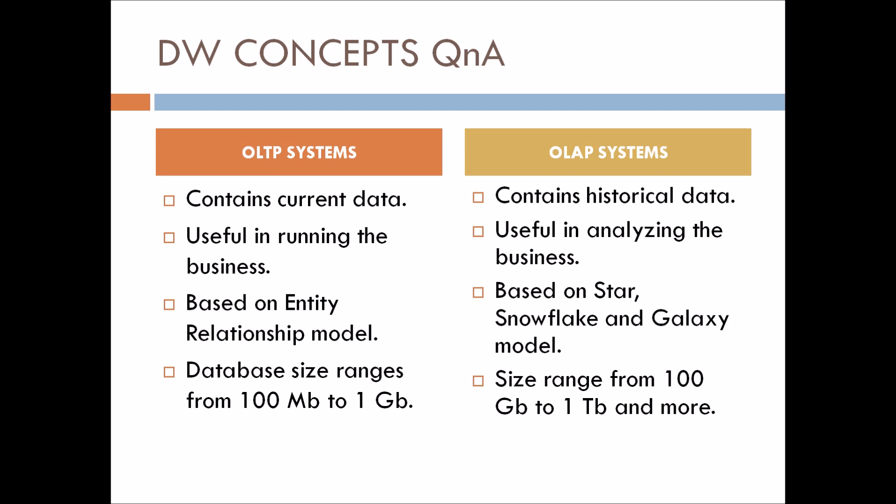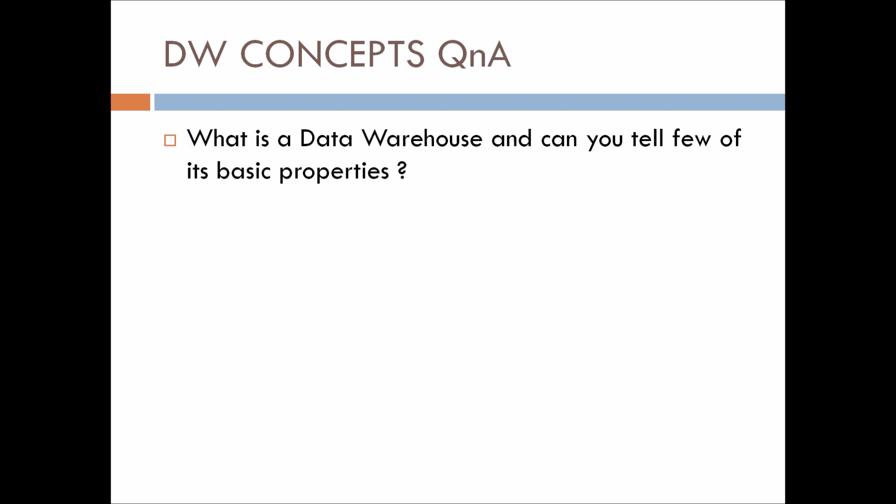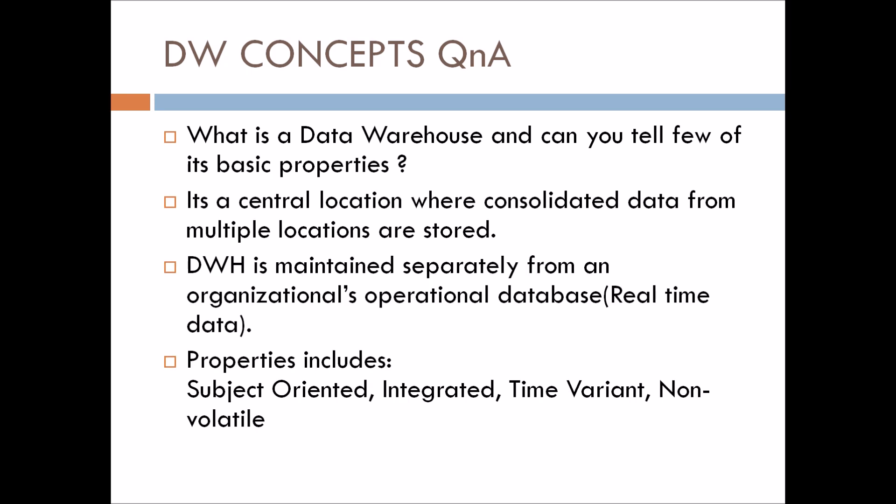Let's move to the next question: What is a data warehouse and can you tell a few of its basic properties? So a data warehouse is the central location where consolidated data from multiple locations is stored. It is maintained separately from an organization's operational database.